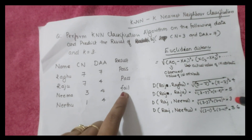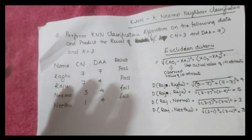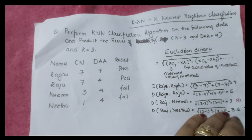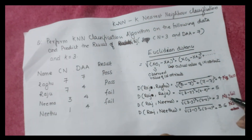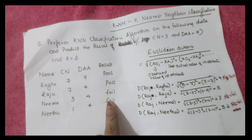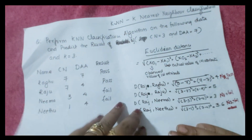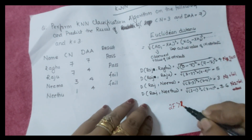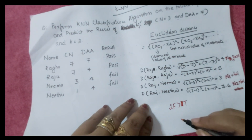However, k is given as 3, so we take the three smallest distances together. N1 (smallest) = Neema, distance 3, result: Fail. N2 (next smallest) = Neetu, distance 3.6, result: Fail. N3 = Ragu, distance 4, result: Pass. Two Fail versus one Pass — two Fail is greater than one Pass, so the final result is Fail.